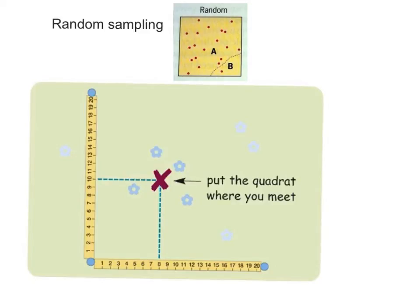The main problem with random sampling is this. If I plot where random points might be, you may end up only collecting data in one particular part of your investigation area.